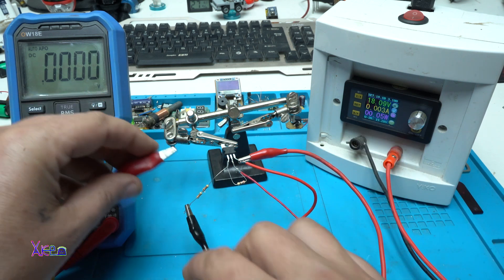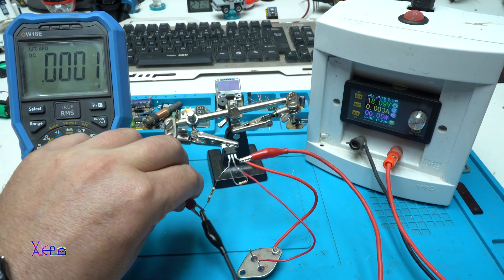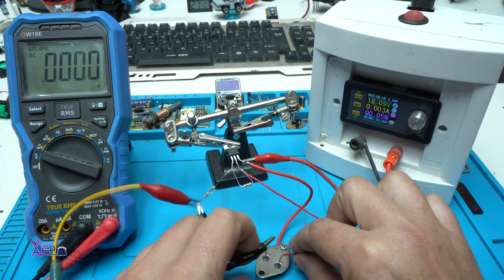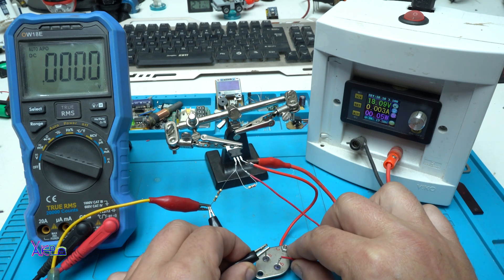The one probe will go on the negative. And the second lead will go on the emitter of the transistor.